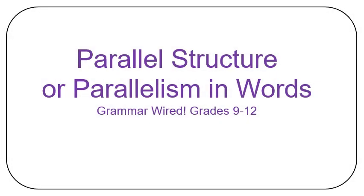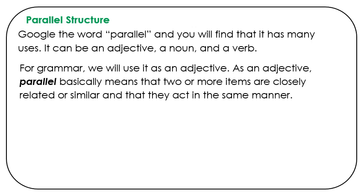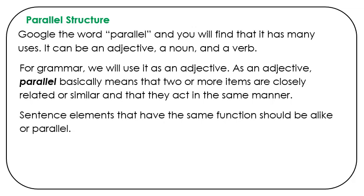Parallel structure, or parallelism in words. Grammar Wired, grades 9-12. Parallel structure. Google the word parallel and you will find that it has many uses. It can be an adjective, a noun, and a verb. For grammar, we will use it as an adjective. As an adjective, parallel basically means that two or more items are closely related or similar and that they act in the same manner. Sentence elements that have the same function should be alike, or parallel.